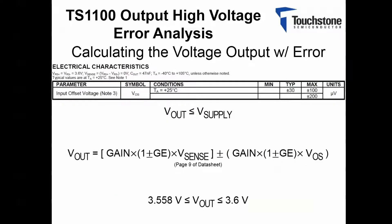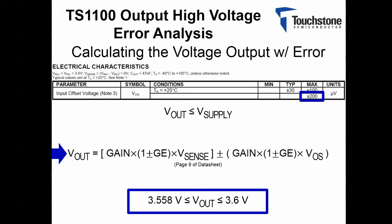Here I have calculated the absolute output voltage with the error. Again, I have considered the maximum range for the input offset voltage across temperature. Highlighted is the voltage output equation to solve for. This results in the given range across temperature for the absolute voltage output.